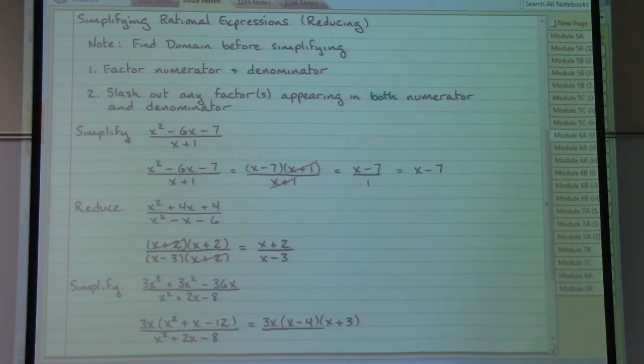Now that the numerator is completely factored, we can look at the denominator. Three terms, AC method comes into play again. We have, coming from there, x minus 4 times an x plus 2.